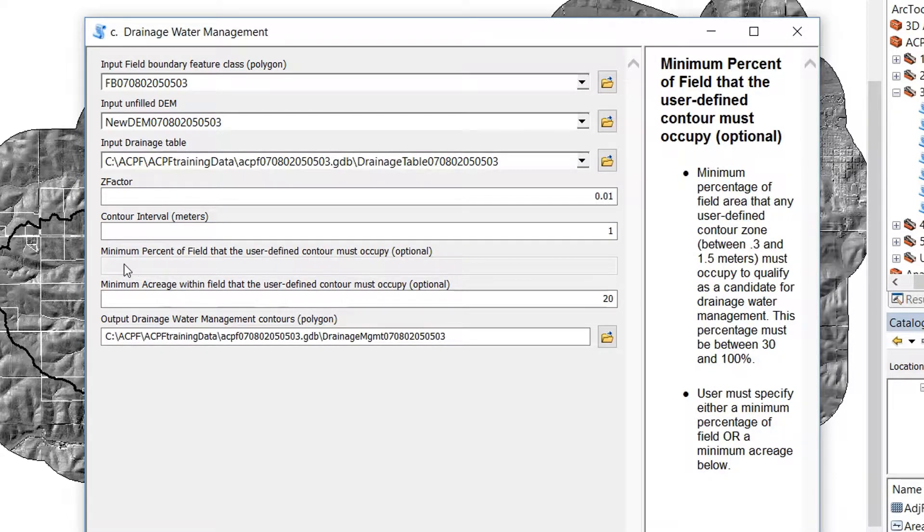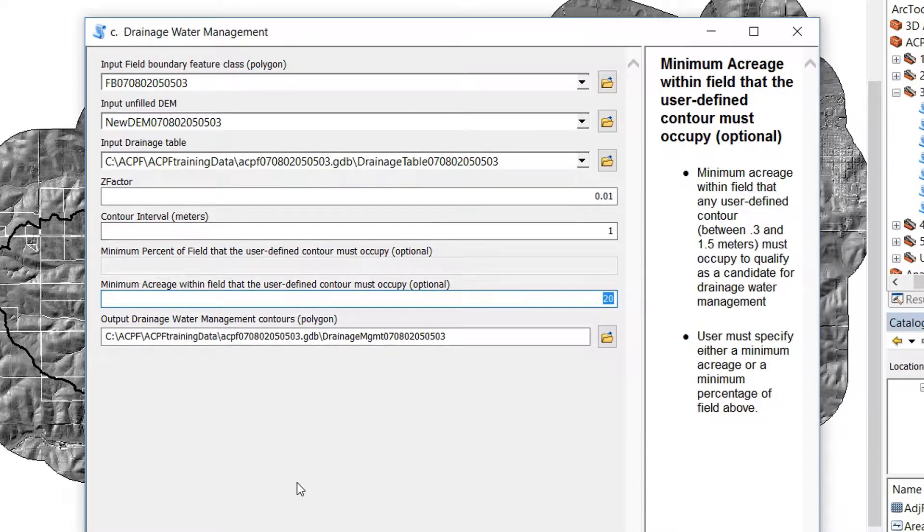And then we have the choice of either supplying the minimum percent of field that the user defined contour must occupy or optionally the minimum acreage within a field that the user defined contour must occupy. I'm going to go with the minimum percent of a field.